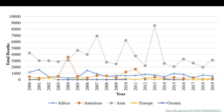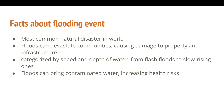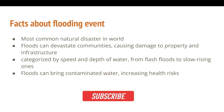Apart from death, let me tell you some facts about flooding. Flooding is the most common natural disaster in the world. It can devastate communities, causing damage to property and infrastructure. Floods are categorized by the speed and depth of water, from flash floods to slow-rising ones. They can also bring contaminated water, which increases health risks after a flooding event.